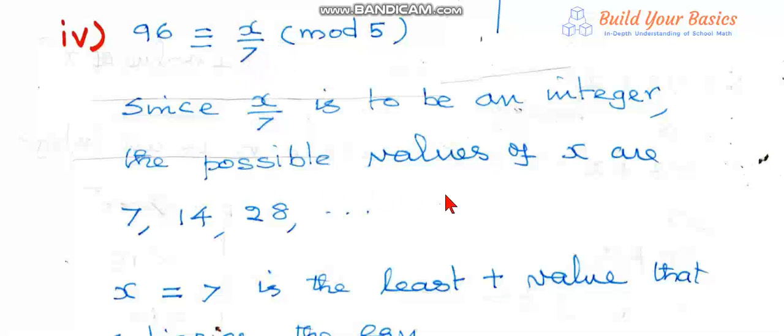So what are the possible values of x? The possible values of x are 7, 14, 28 and so on. That is, multiples of 7.